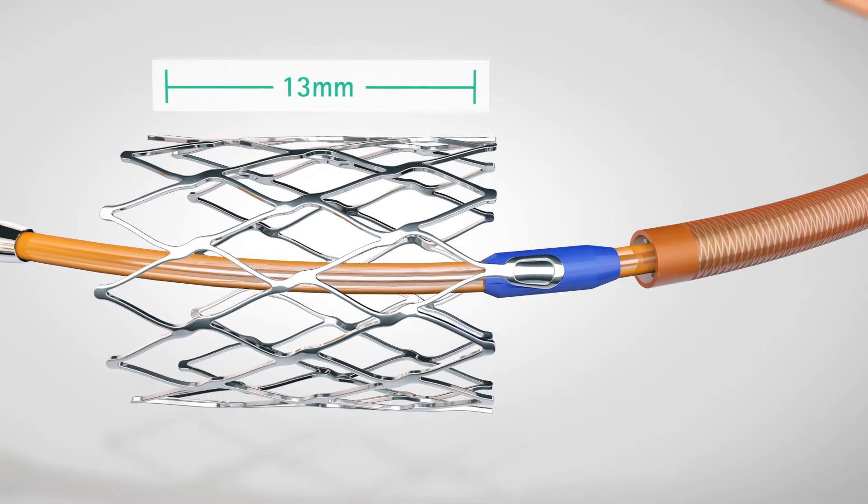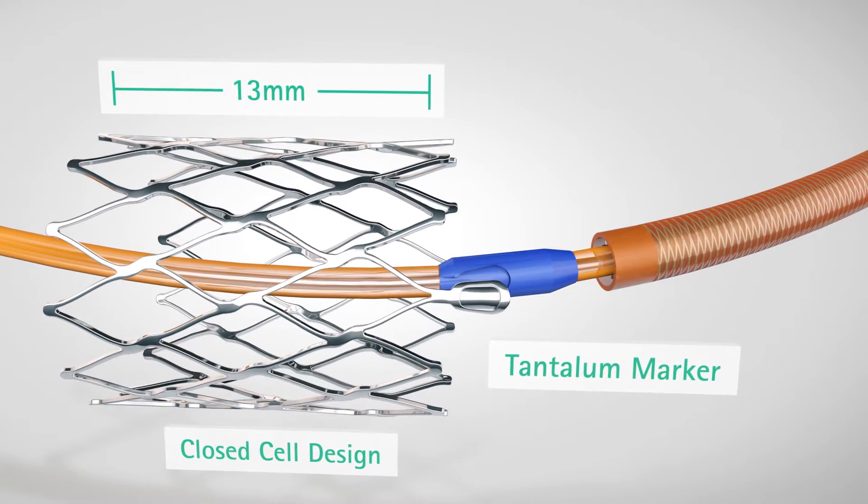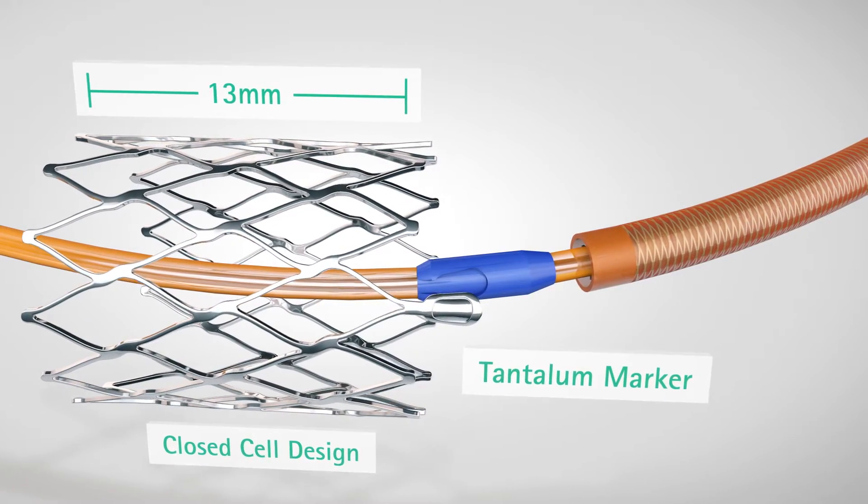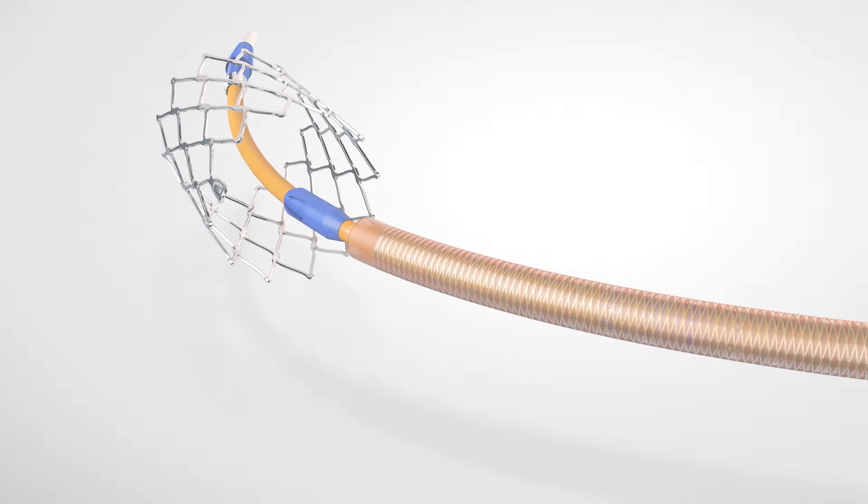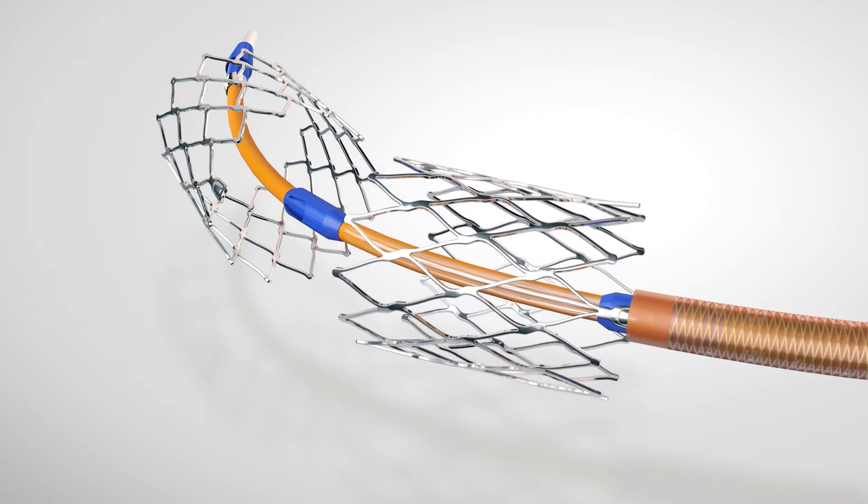The 13mm long stents have a closed cell design with tantalum markers on the proximal ends of the stents. The tantalum markers also help to prevent stent jumping.